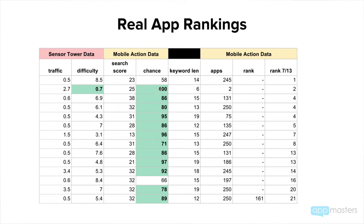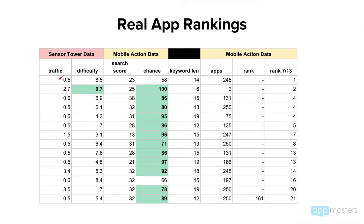For example, this keyword where they're a hundred percent — I'd say they're both pretty similar in terms of traffic score. But for example, this keyword Mobile Action is saying 23 search score, which is decent. And difficulty-wise it's pretty difficult, but we're number one for this particular keyword. Sensor Tower says it's 0.5, and what I can then say is Sensor Tower is probably right.